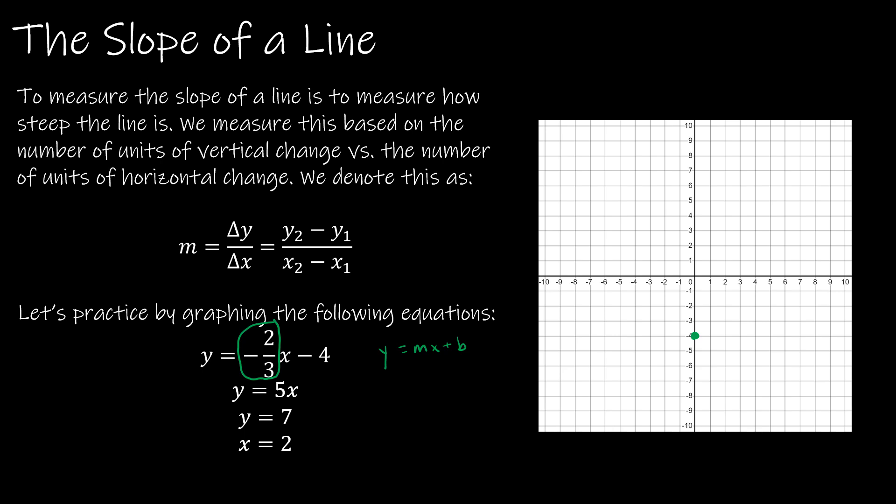Now, negative two-thirds means I can think of it as negative two over positive three or positive two over negative three. If I went down two to the right three, that gives me this point, and I can do that as many times as I need. Or I can go up two, which is positive two, but to the left three. And as you can see, this is still on the same line. So that's how I could graph that first line.